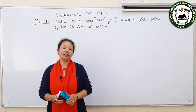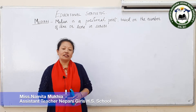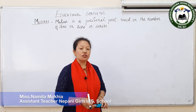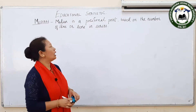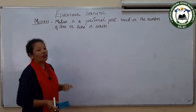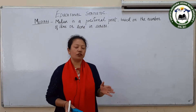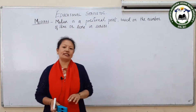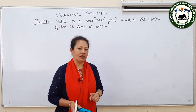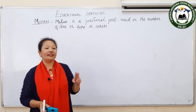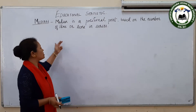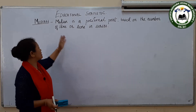Hello dear student, this is Namita Mees from Nepali Girls High Secondary School. Today we will learn how to find out the median. We have done three measures of central tendency — the first is the mean, and this is the second important measure of central tendency, that is the median.